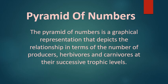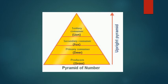Pyramid of numbers — as the name suggests, it's a graphical representation that depicts the relationship in terms of the number of producers, herbivores, and carnivores at their successive trophic levels. But all pyramids are not the same; different ecosystems have different types of pyramid of numbers. The three types are: upright pyramid of number, partly upright, and inverted. Aquatic and grassland ecosystems have the upright type.